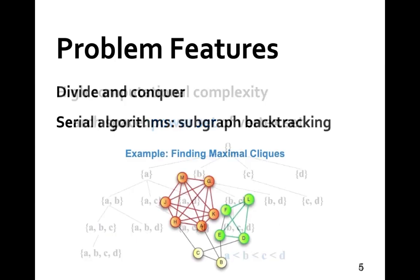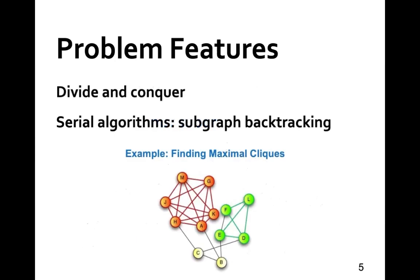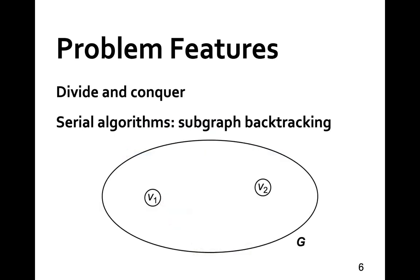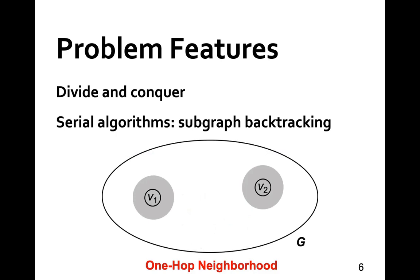In traditional single-threaded algorithms, we usually solve these problems by divide and conquer, backtracking on the nodes in our set enumeration search tree. To illustrate, consider the problem of finding maximal cliques. Since each clique is a complete graph where each pair of nodes are 1-hop away, we can construct 1-hop ego networks around each vertex and find cliques from those subgraphs. If a vertex, say v1, has a high degree and the subgraph around it is still very big, we can recursively divide it into small overlapping subgraphs for further mining.